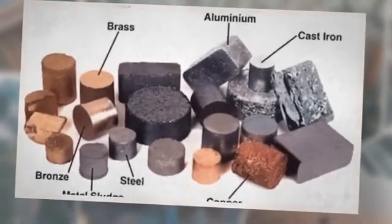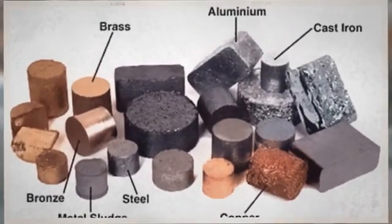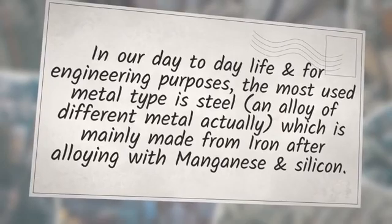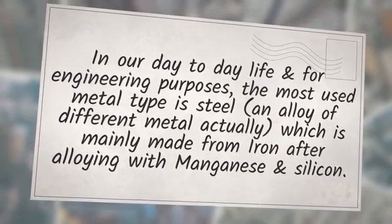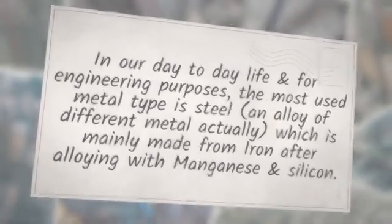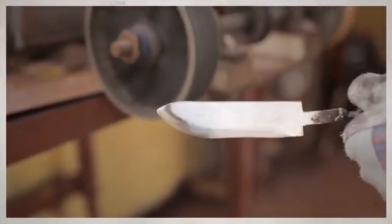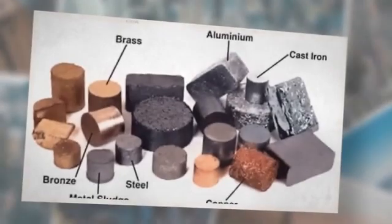There are many types of metal you see around you. Let us know the most important metals and their properties. In our day-to-day life and for engineering purposes, the most used metal type is steel, an alloy of different metals, which is mainly made from iron after alloying with manganese and silicon. Steel is an alloy of iron, silicon, and manganese. There are many types of steel we will learn in this video. But first, what is metal?